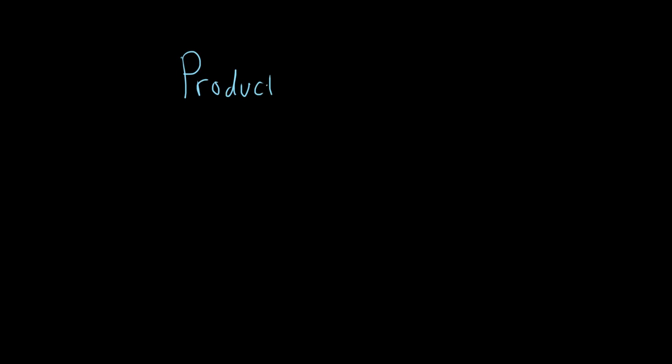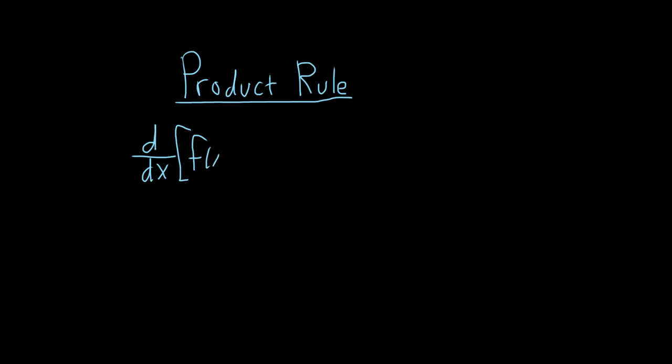In this video, we're going to look at one of the most important rules in all of Calculus 1. It's called the Product Rule. The Product Rule is extremely useful — it basically gives you a formula for the derivative of a product. So, if we have d/dx, the derivative with respect to x, of a function f(x) times g(x), we get the Product Rule.